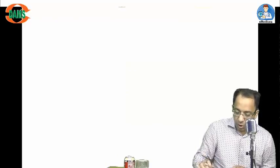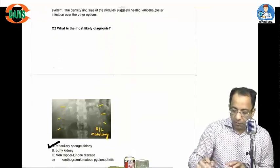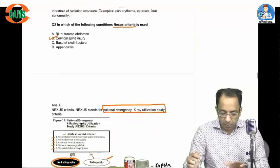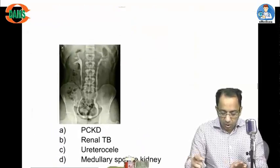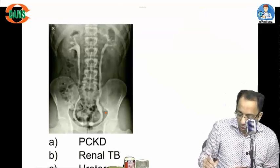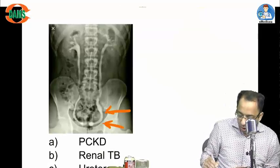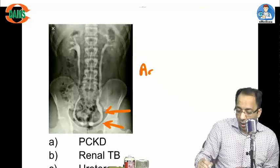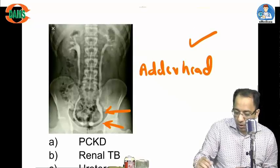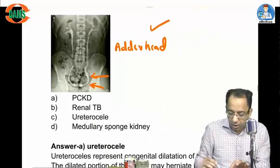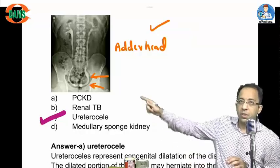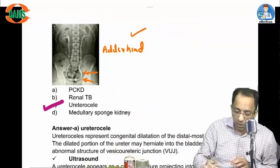This is a previous NEET image showing an IVP. The distal ureter shows gross dilatation with an adder head, cobra head, or spring onion appearance. This is the sign of congenital dilatation of the distal ureter called a ureterocele. This is the exact image from a previous NEET PG exam.